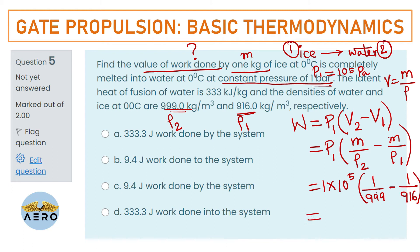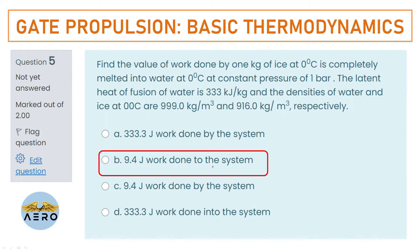Resolving that equation — (916 − 999) in the numerator — we get a negative answer. When solved on the calculator we get approximately −0.07 J. The negative sign means the work done is on the system. The right option is option B.